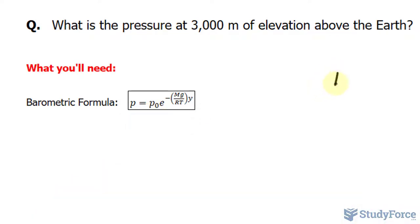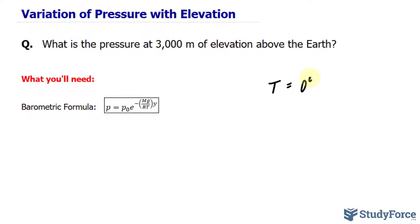So if we set T equal to 0 degrees Celsius, converting that into Kelvin, that's 273 Kelvin.